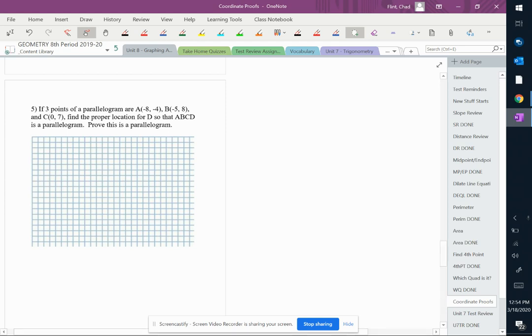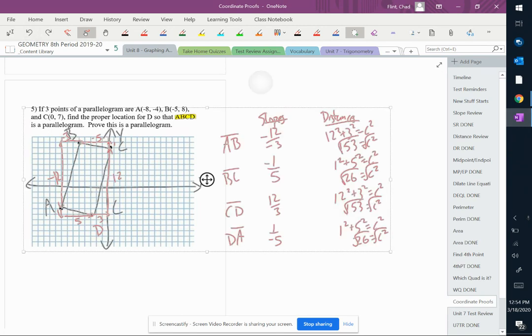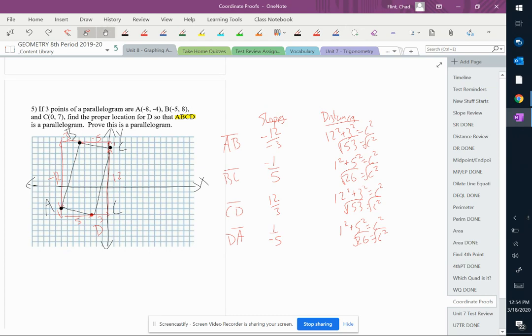So the second part of this problem, after we found the missing point, is that we need to now prove it's a parallelogram. Take a second to finish drawing your shape, getting your slopes and getting your distances, and putting it under the table. Then come back and we'll talk about the last little part of this problem.